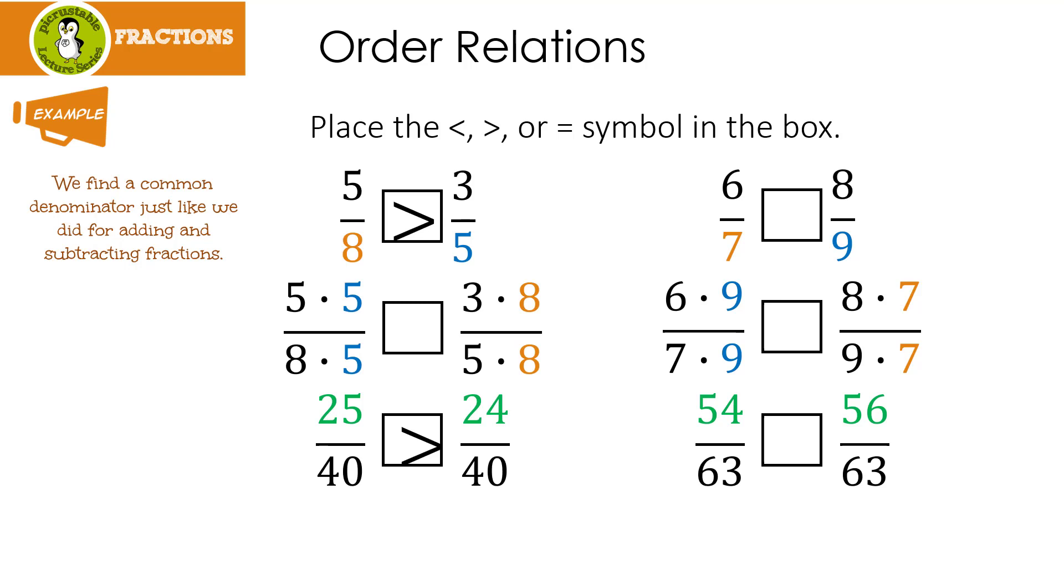In this case, since the bottom or the denominators are the same, I don't care. So which number is bigger, 54 or 56? Well, in this case, 56 is larger. So that means that 6 sevenths is smaller than 8 ninths or 6 sevenths is less than 8 ninths.